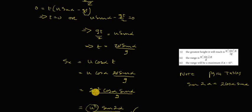So we can then replace our 2 cosine alpha sine alpha with sine 2 alpha. So we have our u squared sine 2 alpha over g, and again that's what they ask us to work out. Good.